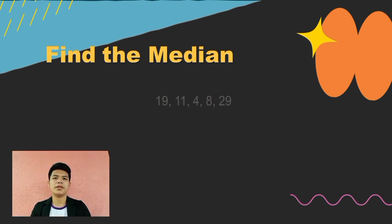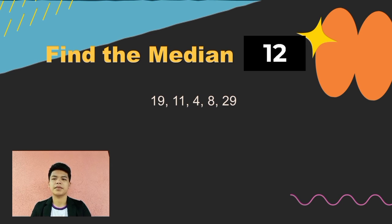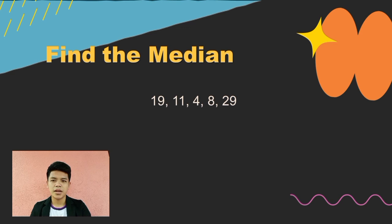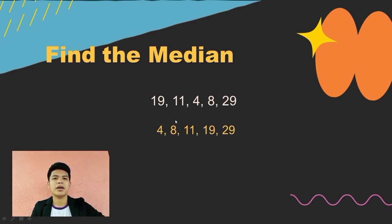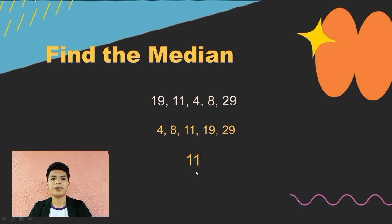Next, find the median of the following set of numbers: 19, 11, 4, 8, and 29. I'll give you 15 seconds to find the median. First, we arrange these numbers in ascending order, from least to greatest: 4, 8, 11, 19, and 29. Our median — the middle number — is 11. Did you arrive at the same answer?